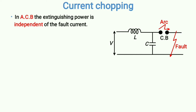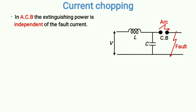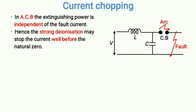This circuit diagram is the same one discussed in the previous video lecture. Although the arc and capacitance don't coexist simultaneously, I have drawn them together for general illustration — when arc is present, capacitance is not, and vice versa. The key point is that the strong deionization may stop the current well before the natural zero.